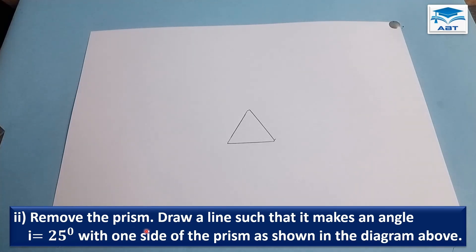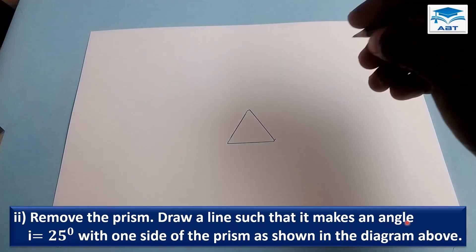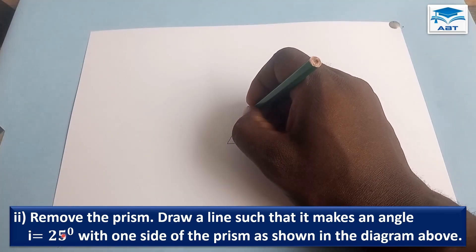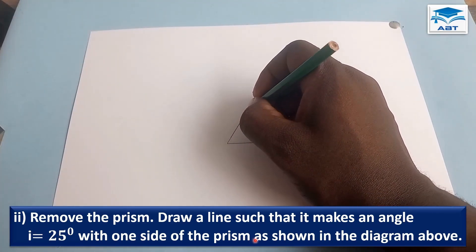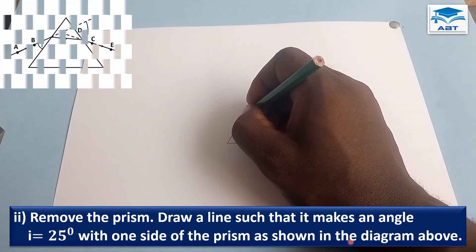Remove the prism. Draw a line such that it makes an angle i equals 25 degrees with one side of the prism as shown in this diagram.